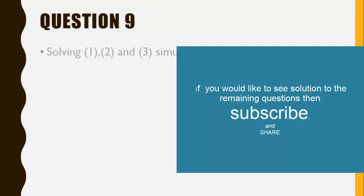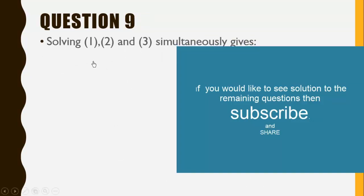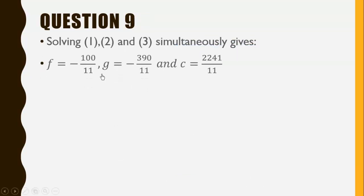When we solve equations 1, 2, and 3 simultaneously, we get f equals negative 100 over 11, g equals negative 390 over 11, and c equals 2241 over 11. Marks will be awarded over here.